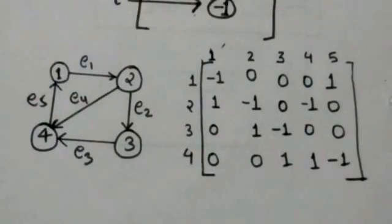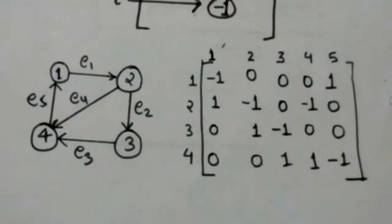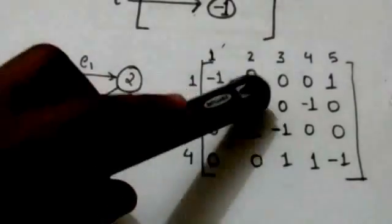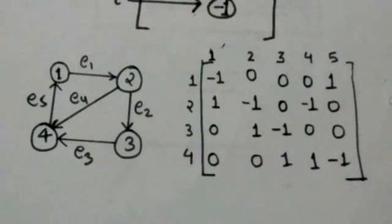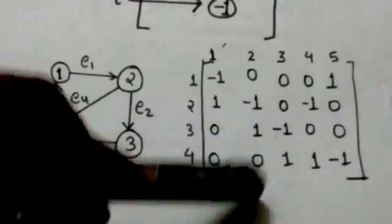There is an arc E2 from vertex 2 to vertex 3 in the digraph. Therefore in the incidence matrix, the entry at the second row and second column is minus 1, and the entry at the third row and second column is 1, and all other entries of the second column are 0.